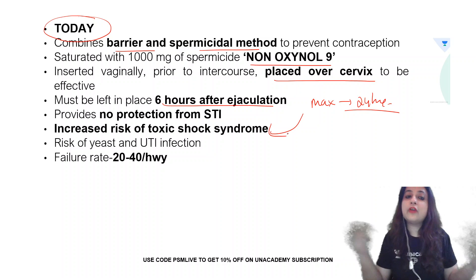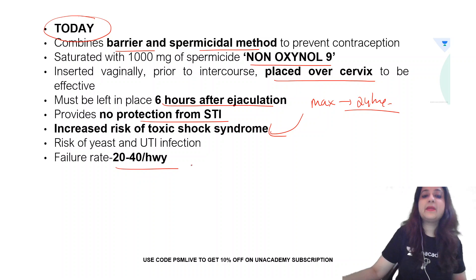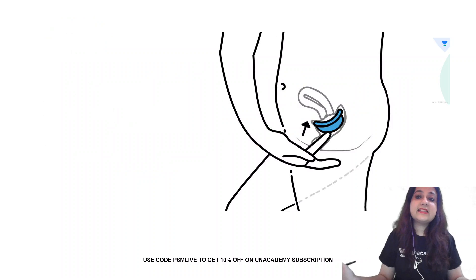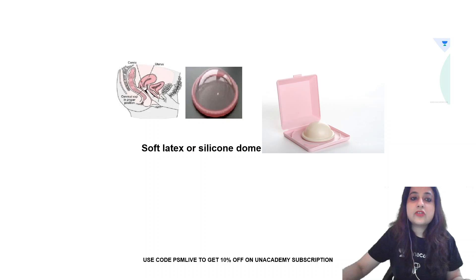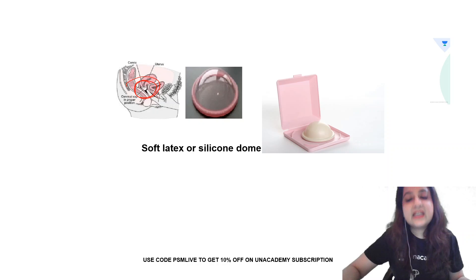It provides no protection from STI and increases the risk of yeast and UTI infection. Failure rate is 20-40 per hundred, particularly high in case of primiparous women. Similarly, this one over here is a diaphragm. This is made up of soft latex or silicone dome. Diaphragm is inserted. Everything is almost the same like that of a vaginal sponge. Even diaphragm can be left up to 24 hours. But beyond that, it leads to toxic shock syndrome. The failure rate of diaphragm is little less than vaginal sponge.